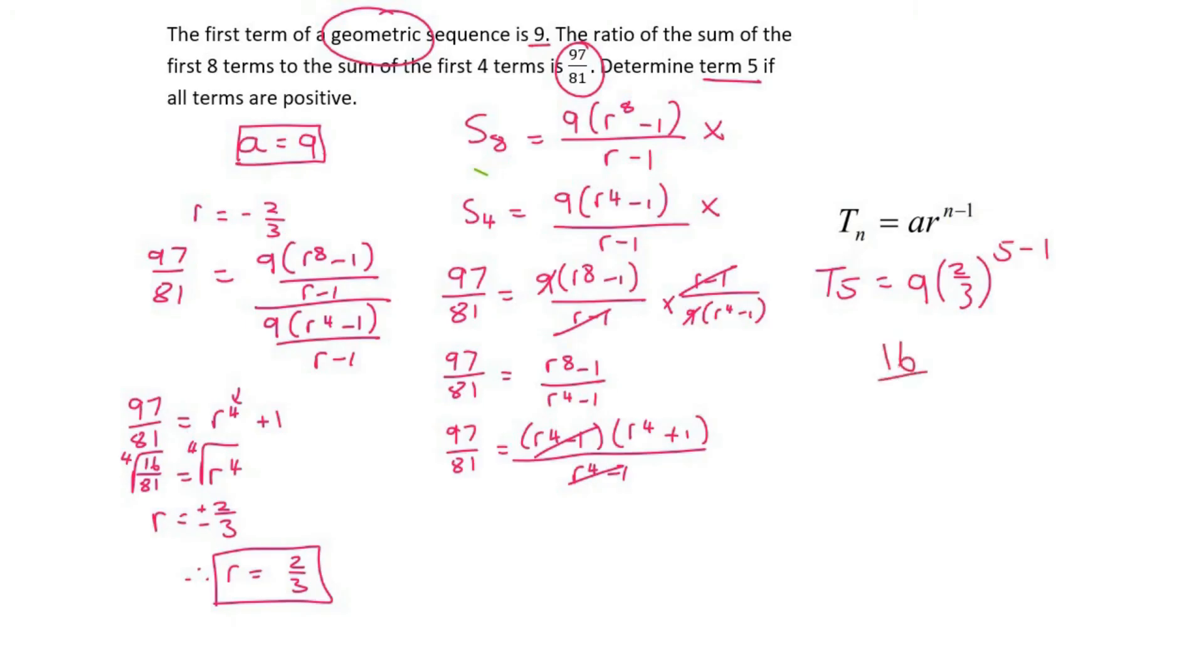And so that's going to be 16 over 9. Now, of course, you could leave it as 16 over 9, or you could write it as a decimal 1.78. If it was in a test, you would most likely do two decimal places.